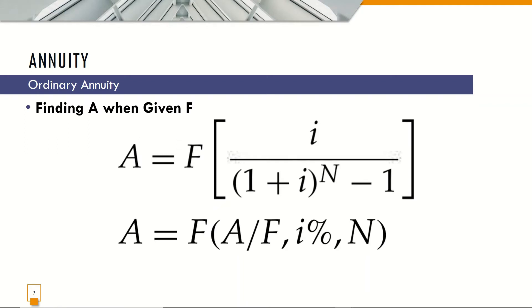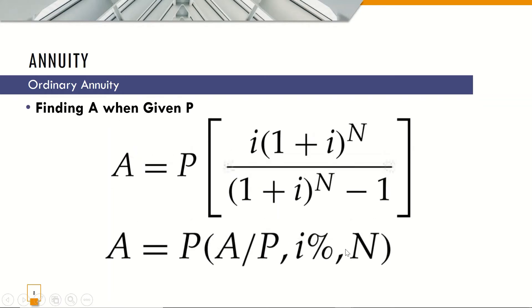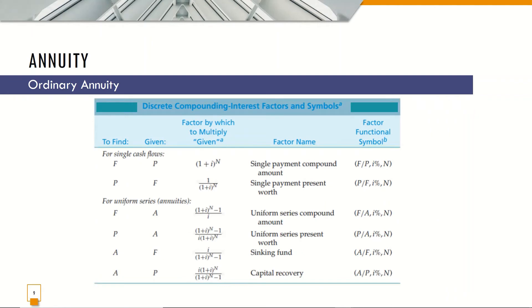This is just the inverse of the previous formula. This quantity can be symbolized as A given F at i percent and at n interest periods. And finding A when P is given: A is equal to P times i times (1 plus i) raised to n, all over (1 plus i) raised to n minus 1. This can be symbolized as A given P at i percent and n interest periods.